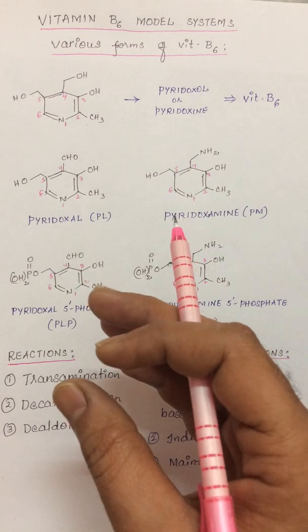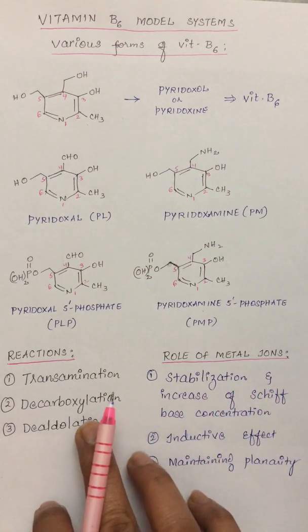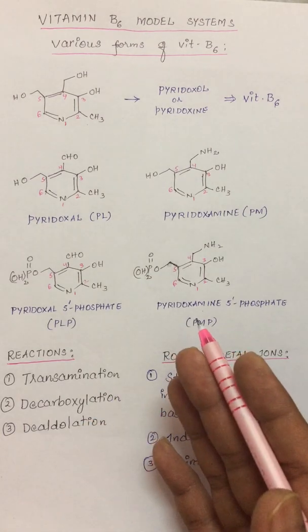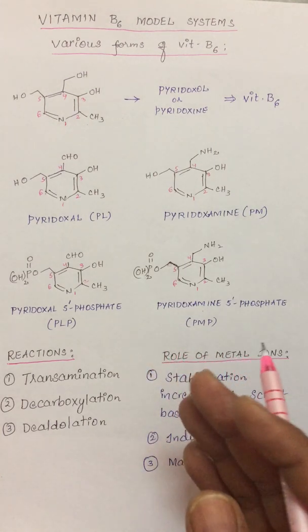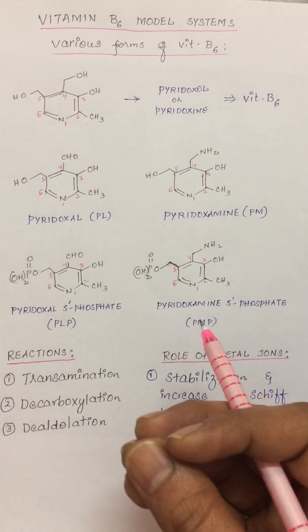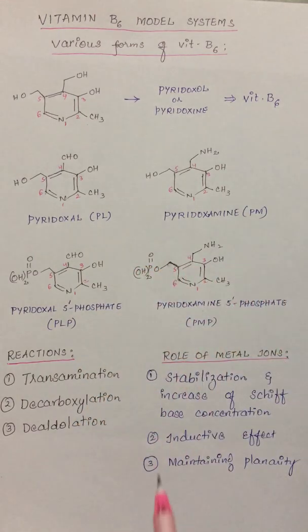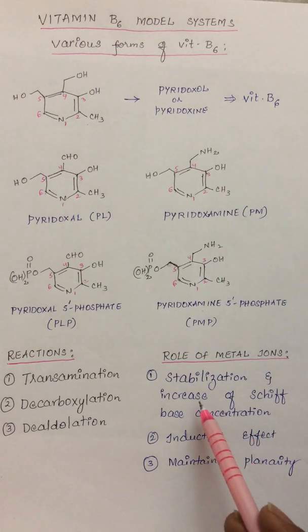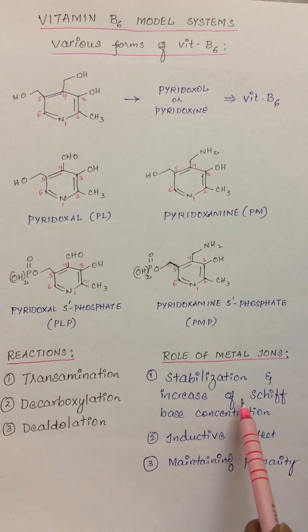What is the role of the metal ions in these reactions? In these model studies, various amino acid reactions are catalyzed by pyridoxal. Whenever some metal ions were added to these systems, there was an enhancement in the rates of the reactions. The reasons for this enhancement can be given as: once the metal ion is added, whatever Schiff base is being formed, its concentration was increasing and also its stabilization increases.